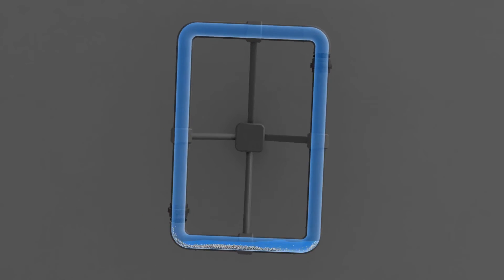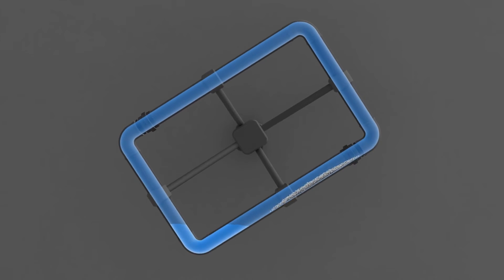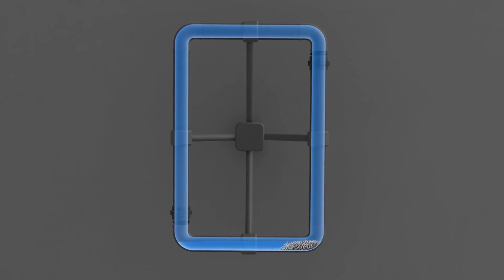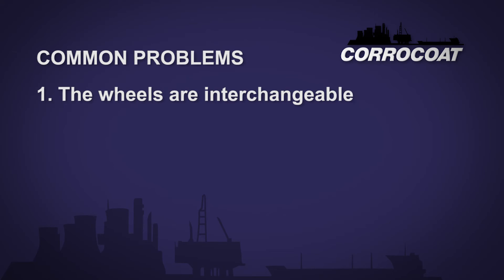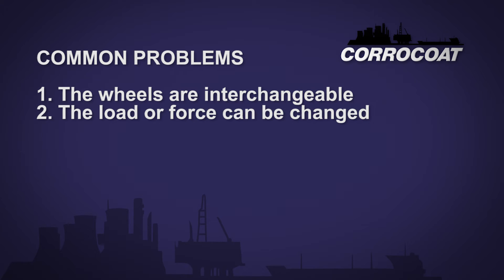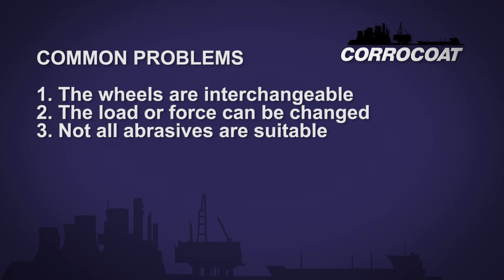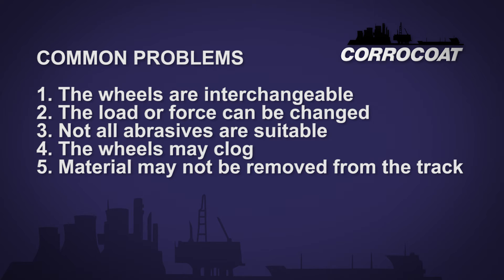The apparatus is dismantled at given time periods and the wear or damage visually evaluated before being put back on test. The components can also be weighed to assess loss. There are several issues with the most common piece of equipment used for testing linings and coatings — the scuffing abrasive wheel method. The wheels are interchangeable with different types of abrasive for different types of material, and the load force can be changed. Not all abrasives are suitable for all materials. The wheels may clog with the abraded material and thereafter stop abrading effectively. The abraded material may not be efficiently removed from the track, giving erroneous results.